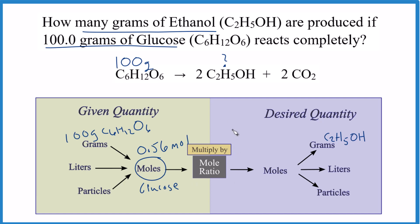Now we need to use this mole ratio here, and we get that from the balanced equation. So our coefficients are 1, 2, and 2. For every 1 mole of glucose, I get 2 moles of ethanol. So I'm getting twice as much. I just need to double this, and that would give me 1.12 moles of the ethanol.